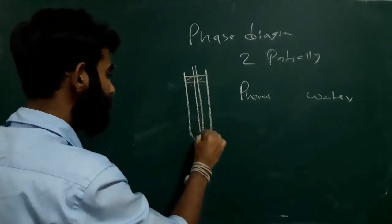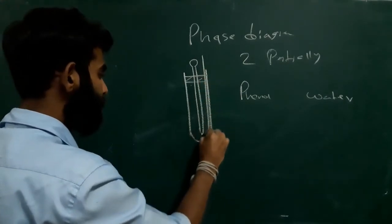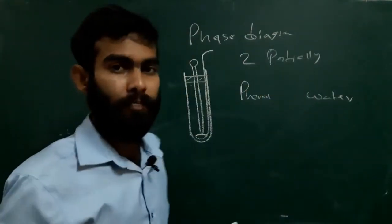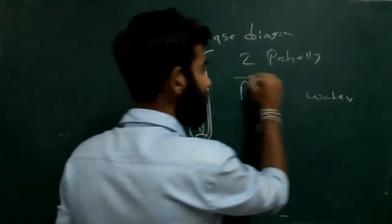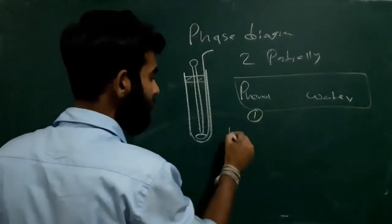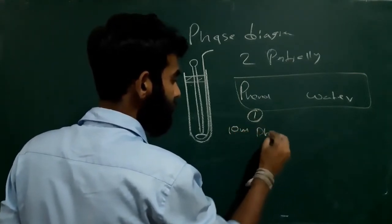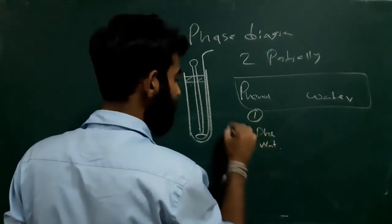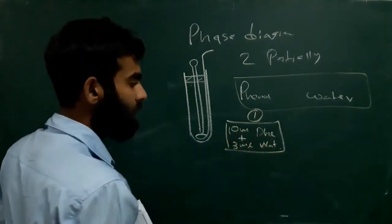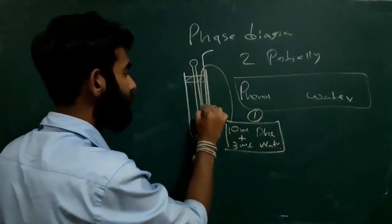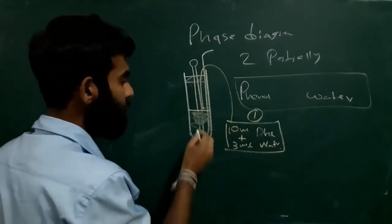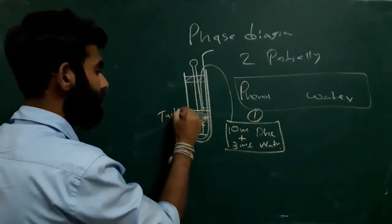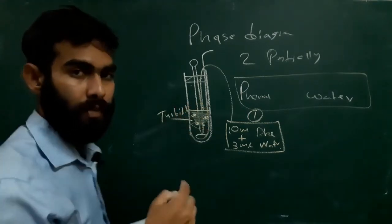We will add a stirrer. There are two sets of experiments in this phenol and water system. In the first set, we will use 10 ml of phenol and 3 ml of water, and we will add these into the boiling tube. Initially, we can see turbidity in room temperature.